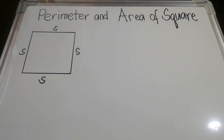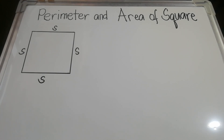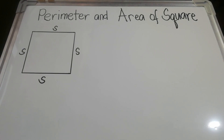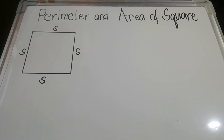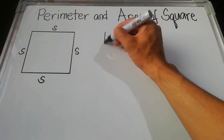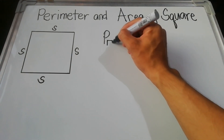Hi everyone, good day! Welcome back to my YouTube channel. This is the second part of finding the perimeter and area of plane figures. Today we will discuss the area and perimeter of the square. A square has four equal sides — as you can see in the figure, each side is marked as s, since all sides are equal, meaning all side measurements are equal. So for the perimeter, let's use P of the square.